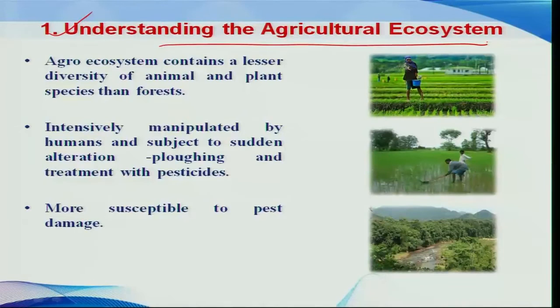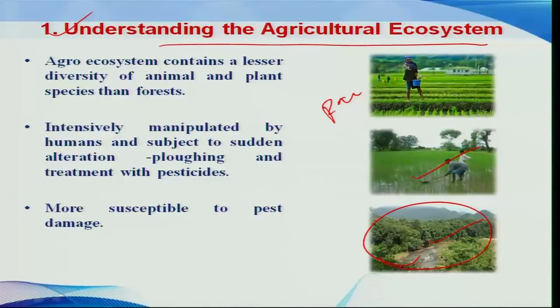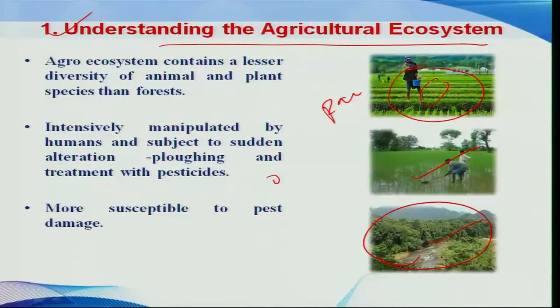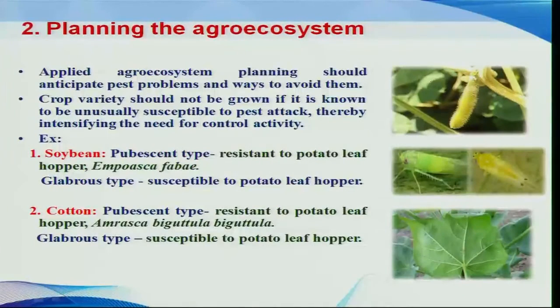An ecosystem contains various entities like forest, agriculture, ponds, etc. The agriculture ecosystem is less diversified than a forest ecosystem, and hence it is susceptible to various unusual catastrophic events of pest incidents. This agricultural ecosystem is continuously manipulated by human beings because of various agronomic practices followed for raising crops. Hence, this agro-ecosystem is highly susceptible to the attack of various pests and diseases.